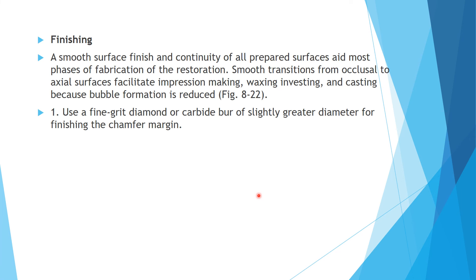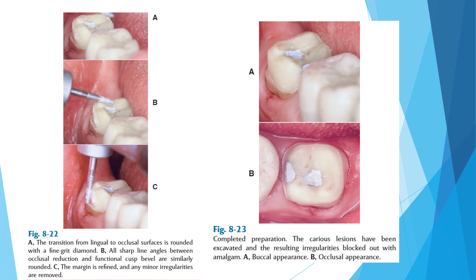Finishing must result in a smooth, continuous preparation to facilitate impression making, wax pattern, investment, and casting fabrication. A fine-grit diamond or carbide bur of slightly greater diameter is used for finishing the chamfer. The lingual and occlusal surfaces are finished such that all line angles and point angles are rounded — nothing should be flat.